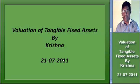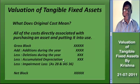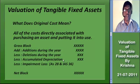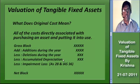Valuation of Tangible Fixed Assets. An asset that has a physical form such as building, machinery, or vehicles is called a tangible fixed asset. This is the opposite of an intangible asset such as a patent or trademark.